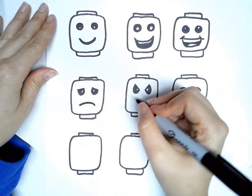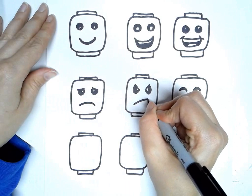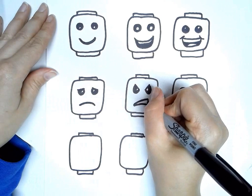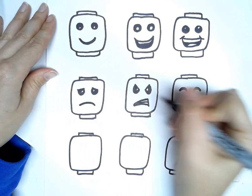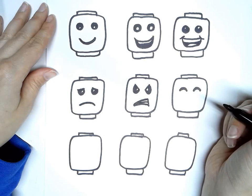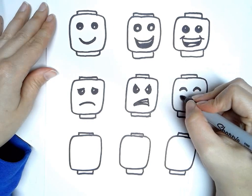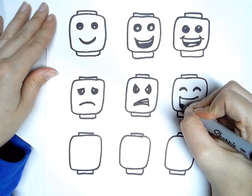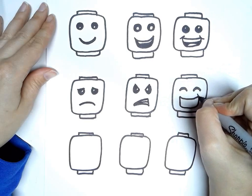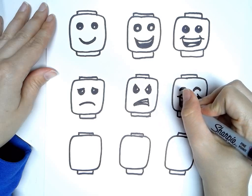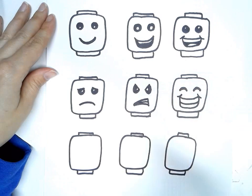For angry, I can make its teeth like, grrr, like it's clenching its teeth. For the happy one, it's kind of smiling so big. I'm going to show both its teeth. It's going to have like a huge smile. It's so happy. It's a huge smile like that.